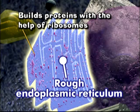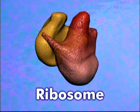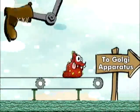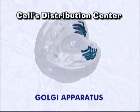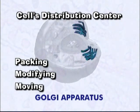The rough endoplasmic reticulum builds proteins with the help of ribosomes. Ribosomes are attached to the endoplasmic reticulum, giving it that bumpy or rough look. Ribosomes are the protein builders of the cell — they can be found floating in the cytoplasm or attached to the endoplasmic reticulum. After the ribosomes build proteins, the proteins move to the Golgi apparatus. As the cell's distribution center, this organelle is in charge of packing, modifying, and moving proteins and other recently made substances from the cell.